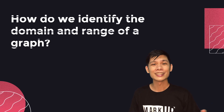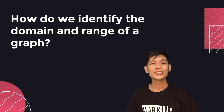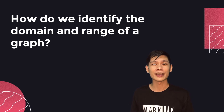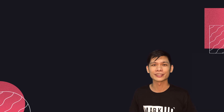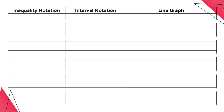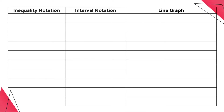Now let's check the method on how to write down or identify the domain and range of a graph. If the graph function is given, we have to know the following notations and symbols.